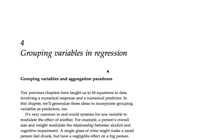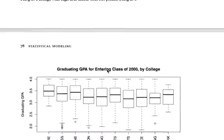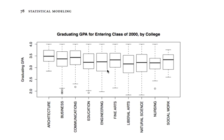They're all grouping variables. That scenario — one numerical variable and potentially lots of grouping variables as predictors — can get at a lot of the important concepts here. To introduce this idea, we're going to use one of our favorite data sets: the data set on graduating GPA for University of Texas students in the entering class of 2000.